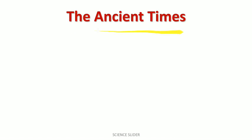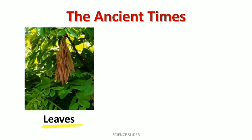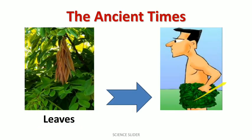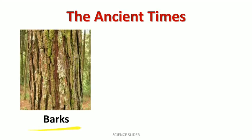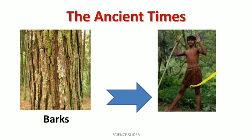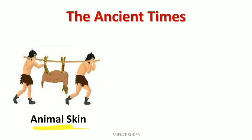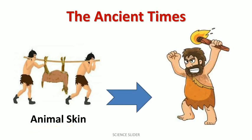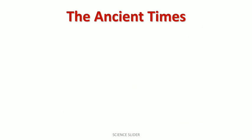In ancient times — in the old days — people used to wear leaves to cover their body. They also used to wear the barks of trees to cover their body, and they used to wear animal skin to cover their body.